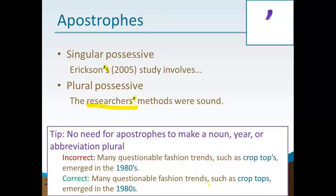A little tip: you don't need an apostrophe to make a date plural. I very often see students write things like the 1980s or the 1950s or the 1800s and include an apostrophe before the S. That's not necessary because the dates are plural, but they're not possessive — in other words, you're not saying that anything belongs to those years, so you don't need an apostrophe.